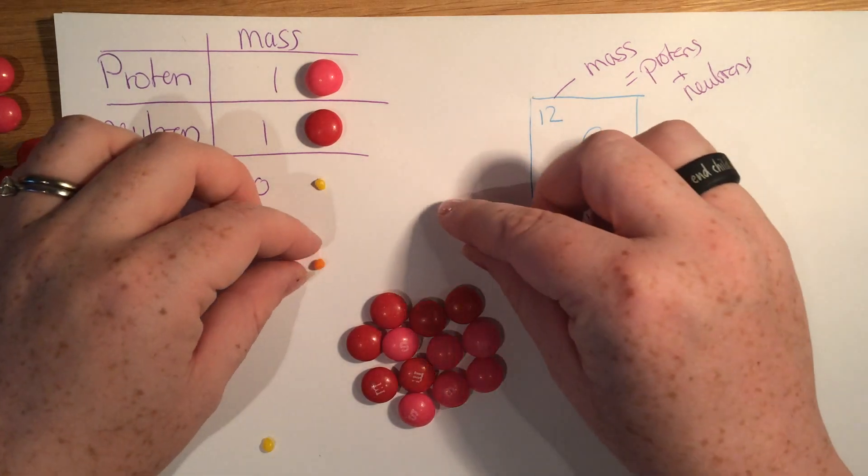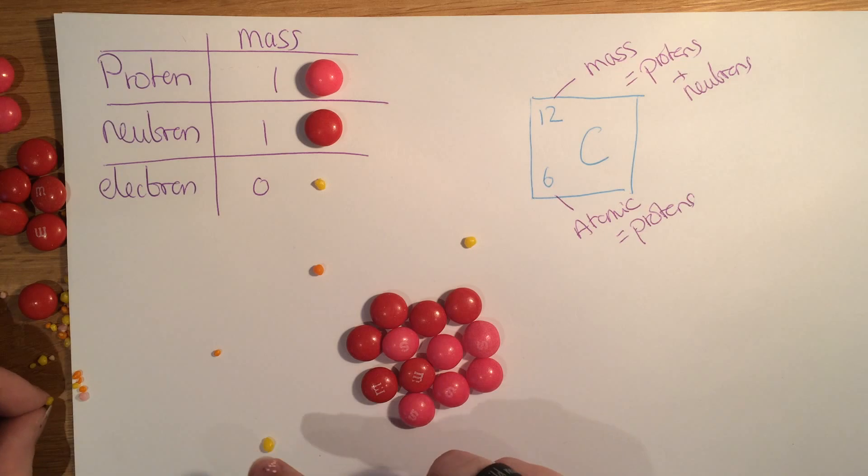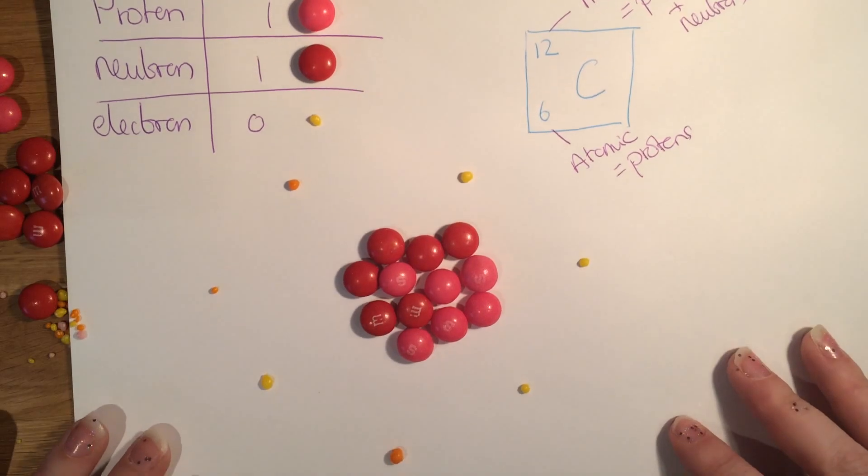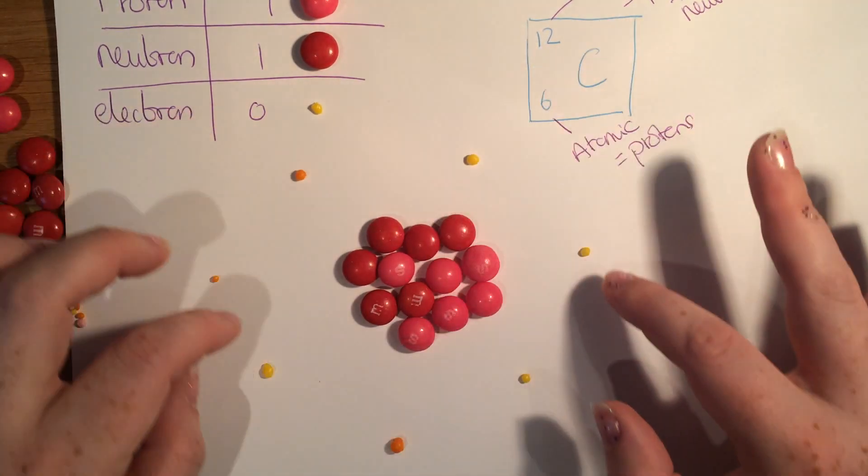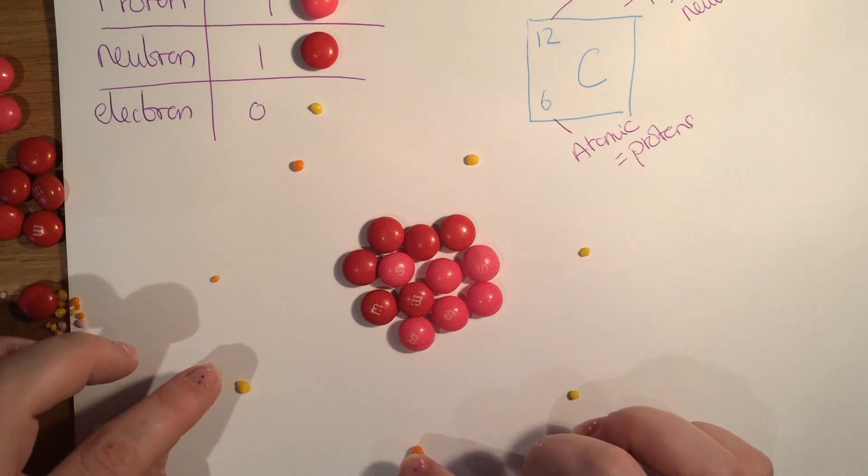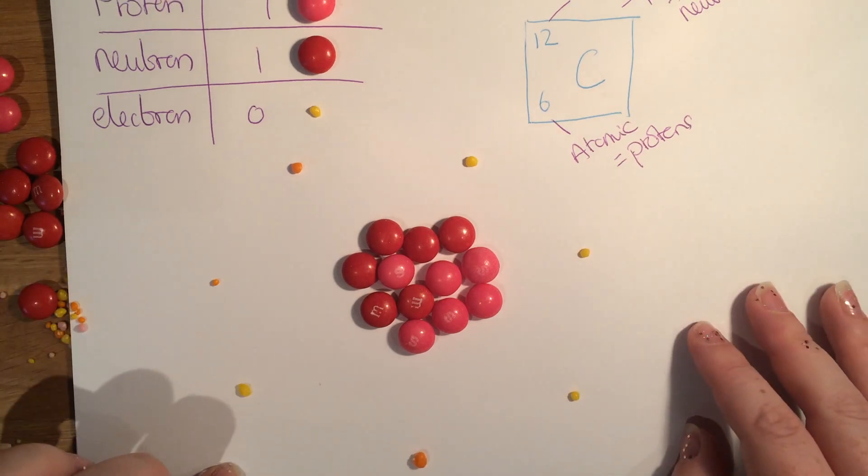These electrons are absolutely tiny. One, two, three, four, five, six. And they're whizzing around the outside like that. So all the heavy stuff is in the middle. And then there are these teeny tiny little electrons that fly around the outside.